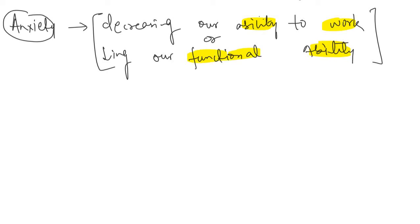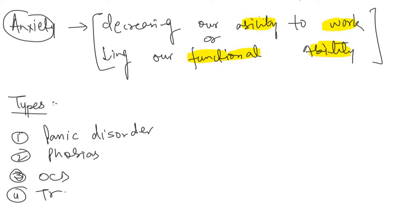There are various types of anxiety disorders. If we talk about the types, first of all we have something which is called panic disorders. Next we have phobias. Then we have obsessive compulsive disorder. Then we have trauma related disorders in which we have acute stress disorder and post-traumatic stress disorder. And finally, we have the generalized anxiety disorder.